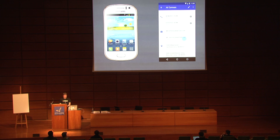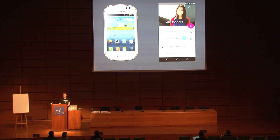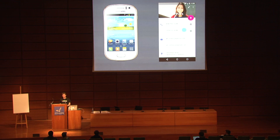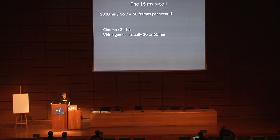So what we are going to do is investigate what is going on exactly — why don't we have good performance and what we can do about it. First, let's define exactly what we mean by good performance. We often talk about the 16-millisecond target. It's simply because if you take one second and divide it by 60, you get 16.7. So we are trying to display 60 frames each second.